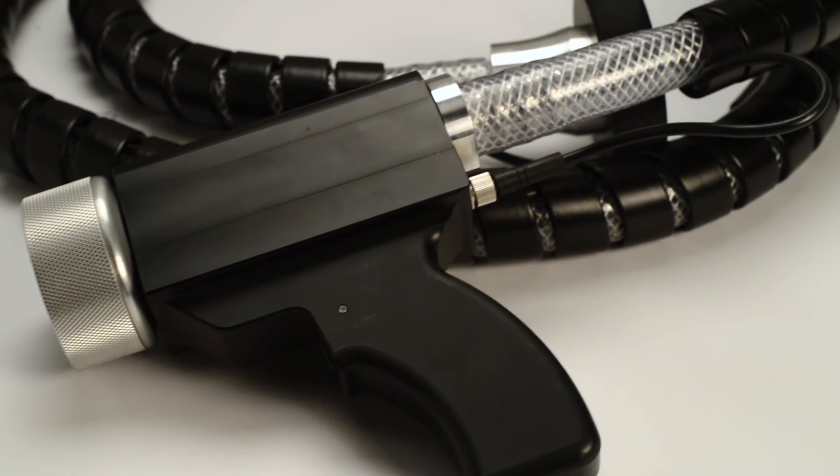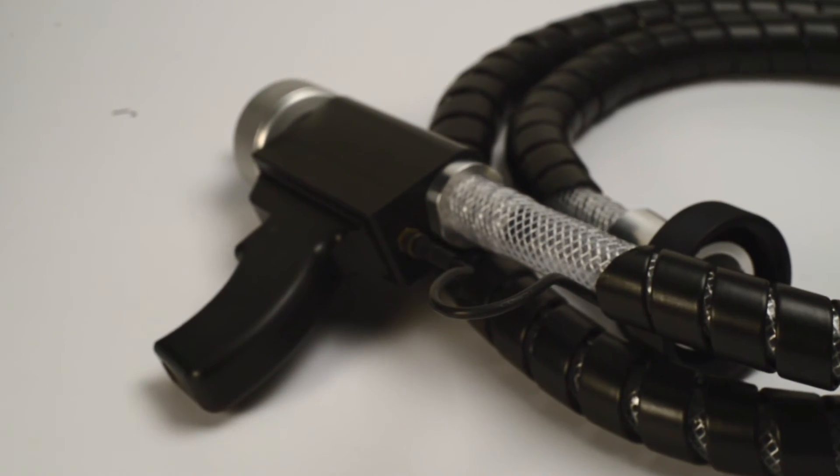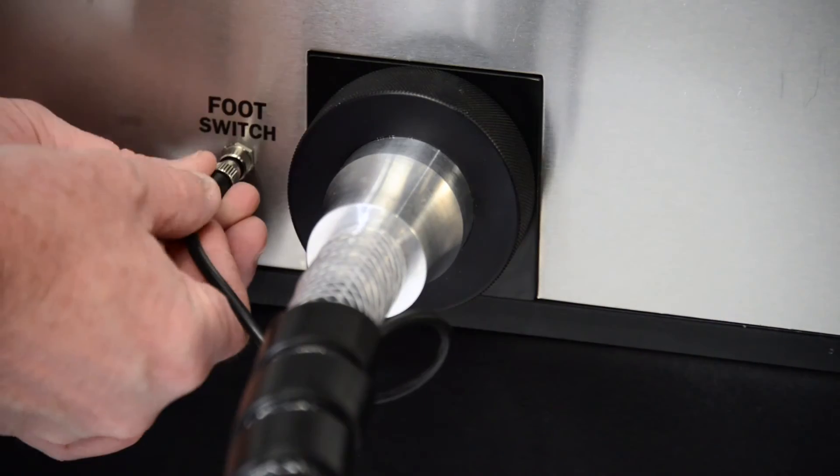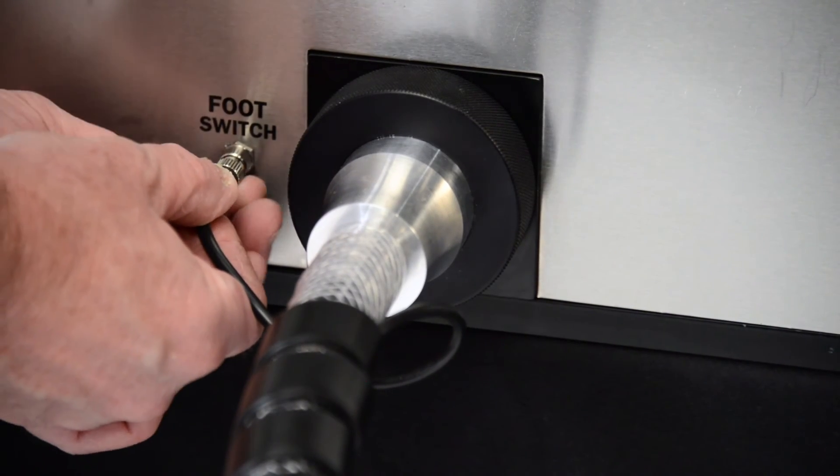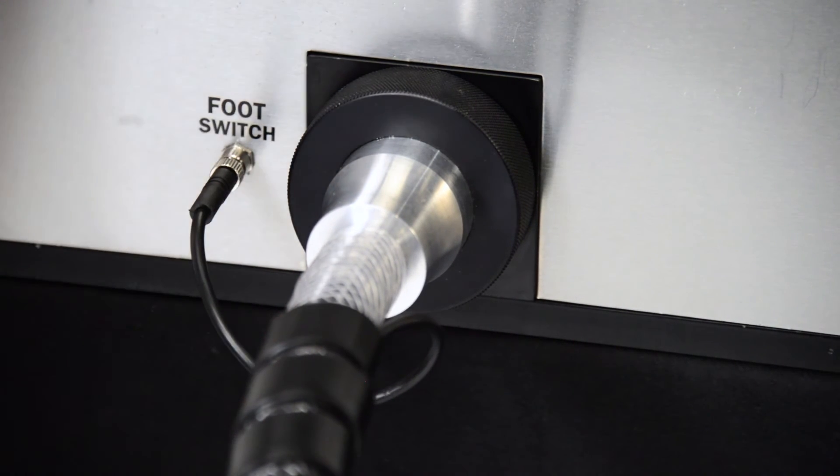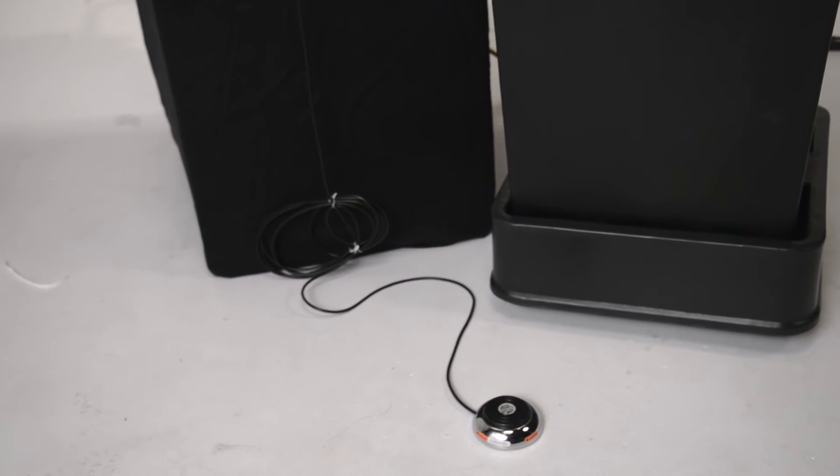Handheld launcher attachments are also available and come complete as an assembly. Screw the locking ring onto the front of the firing chamber and hand tighten. Attach the electronic trigger cable to the front panel. You have the option of using the electronic footswitch to initiate the firing sequence as well.